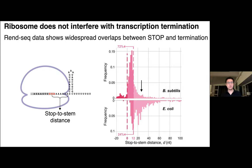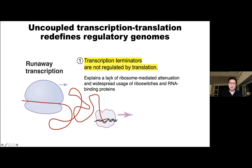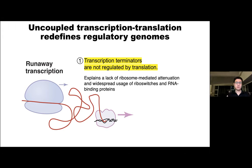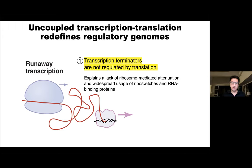Most transcription in Bacillus subtilis probably happens without a closely trailing ribosome. This explains something noted anecdotally but now makes sense: in Bacillus, there are very few or almost no ribosome-mediated transcriptional attenuation events. Instead, they use riboswitches and RNA binding proteins to regulate transcription co-transcriptionally. This explains the different space of possible gene regulatory networks allowed between E. coli and Bacillus subtilis.